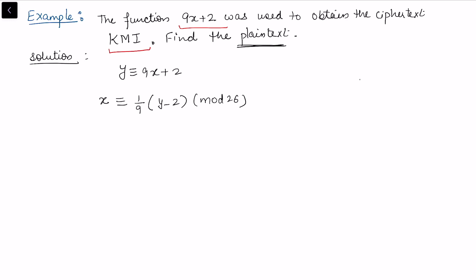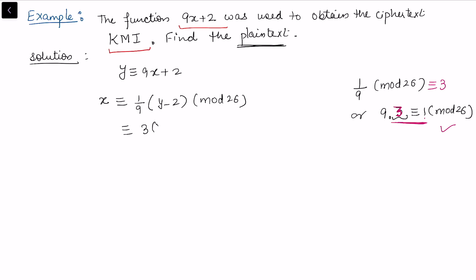We need to find what integer multiplied by 9 gives 1 mod 26. Testing y'=3: 9×3 = 27 ≡ 1 mod 26. So 9⁻¹ ≡ 3 mod 26. Replacing, the deciphering function becomes x ≡ 3(y − 2) = 3y − 6 mod 26.